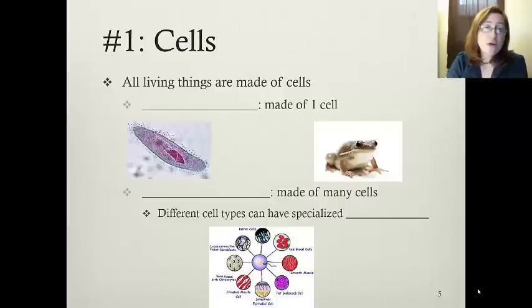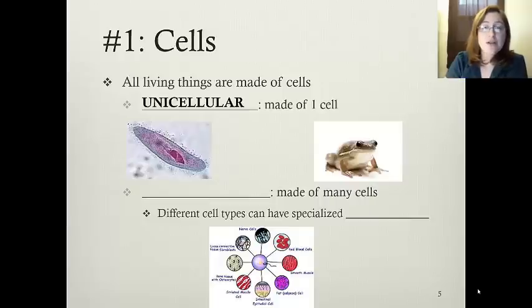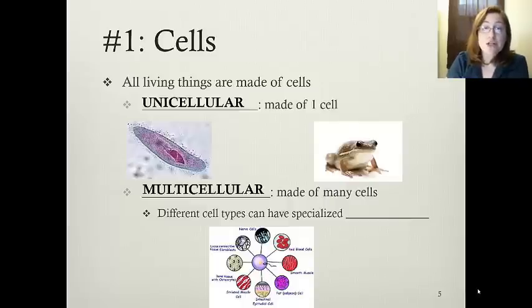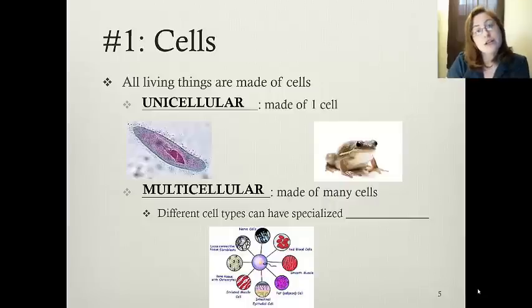The first characteristic: if you are going to be living, you have to be made of cells. It can be one cell — in that case you are a unicellular organism, like the paramecium here on the left side. Or you can be made of many cells, which would be multicellular. As humans, we are made of over a trillion cells. And there is a benefit to being multicellular versus being unicellular — you can start assigning different cells to do different jobs.